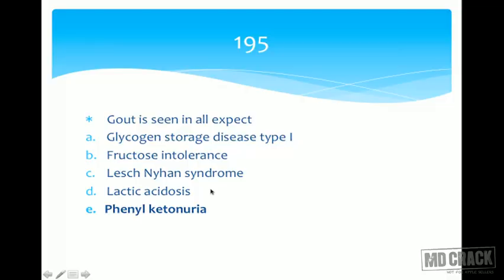Lesch-Nyhan syndrome is due to deficiency of HGPRT (hypoxanthine-guanine phosphoribosyltransferase); the salvage pathway fails, purines are degraded causing hyperuricemia. In lactic acidosis, lactate competes with uric acid for the same renal excretory mechanism, leading to decreased uric acid excretion, hyperuricemia, and gout. Phenylketonuria has none of these mechanisms, so gout is not seen there.